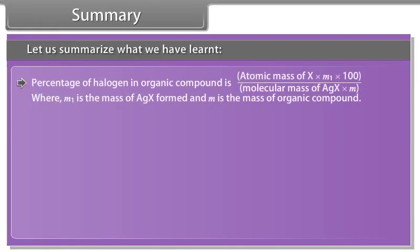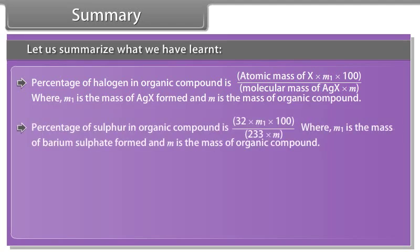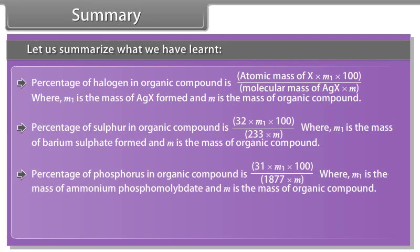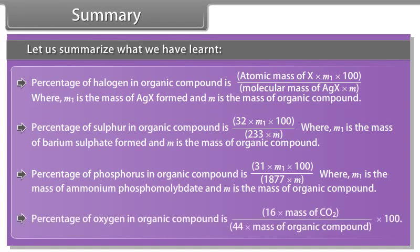Percentage of halogen = (atomic mass of X × M₁ × 100) ÷ (molecular mass of AgX × M), where M₁ is the mass of AgX formed and M is the mass of the organic compound. Percentage of sulphur = (32 × M₁ × 100) ÷ (233 × M), where M₁ is the mass of barium sulphate formed. Percentage of phosphorus = (31 × M₁ × 100) ÷ (1877 × M), where M₁ is the mass of ammonium phosphomolybdate. Percentage of oxygen = (16 × mass of CO₂) ÷ (44 × mass of organic compound) × 100.